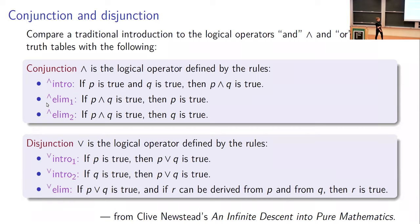Newsted's textbook introduces conjunction and disjunction in the following way. Conjunction is a logical operator defined by introduction rules and elimination rules. The introduction rules explain the strategy needed to prove a theorem involving a particular connective, whereas an elimination rule explains how you could use a hypothesis involving a particular connective to prove something else.